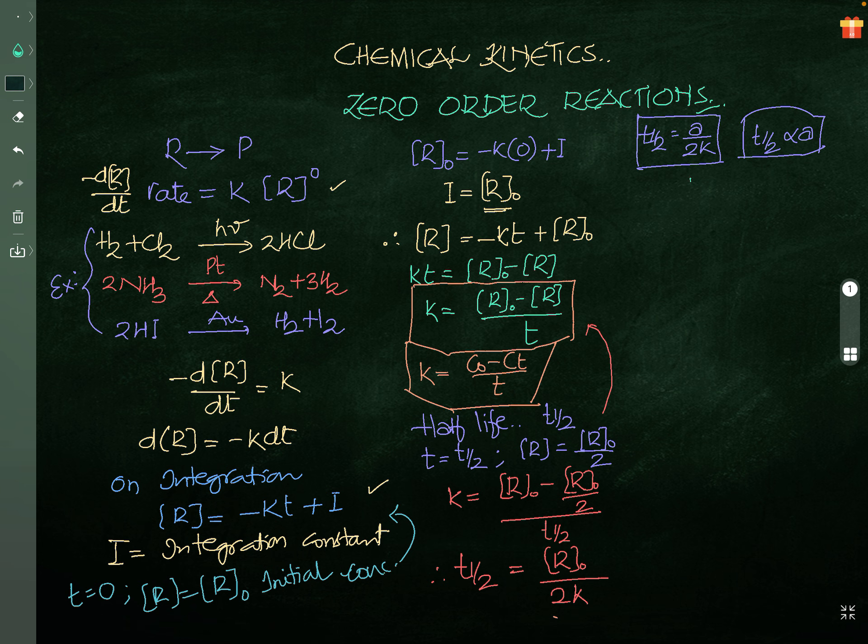Here we have a graph. For example, T half and A, if you take, the graph then will be like this because it is directly proportional. One more graph we'll take. R versus time. Concentration versus time, if you take, the slope will come like this. Negative slope will be there. Minus K and the intercept is R0. Intercept is R0, slope is minus K. When you are taking R versus time graph, this is for zero-order reaction.